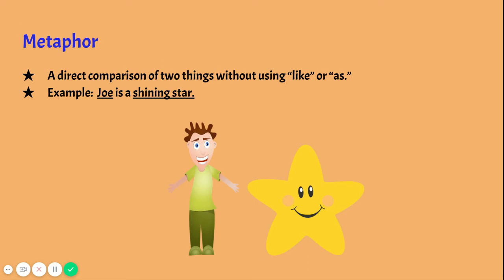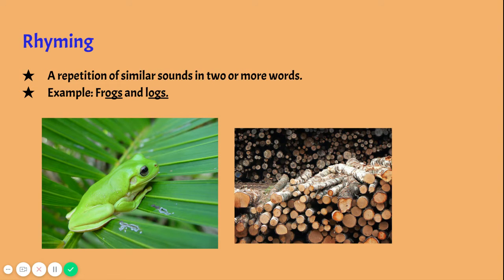Now we're going to talk about metaphors. A metaphor is very similar to a simile except it's a direct comparison of two things without using 'like' or 'as,' which makes it more direct. For example, 'Joe is a shining star' — we're comparing Joe to a shining star without using 'like' or 'as,' so it comes off more literal and direct. Obviously he's not a shining star, but saying that allows you to associate him with doing something above and beyond, because we associate shining stars with positive things.